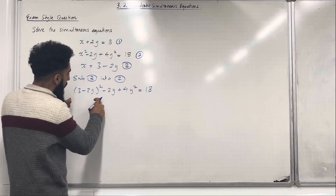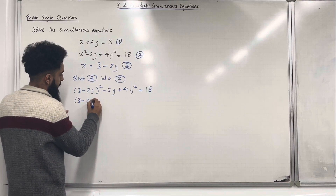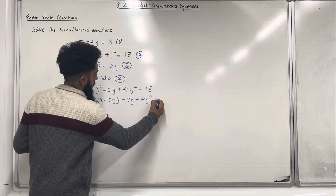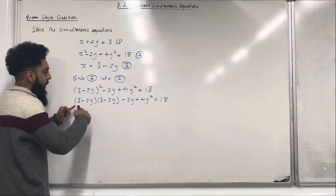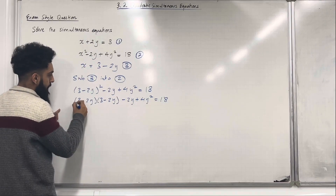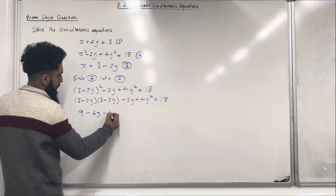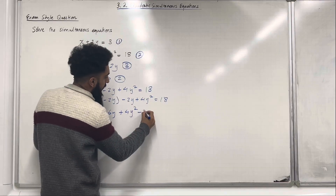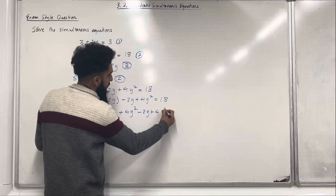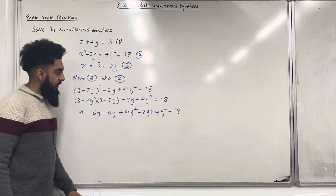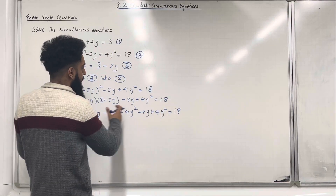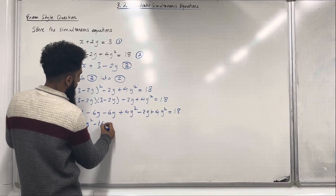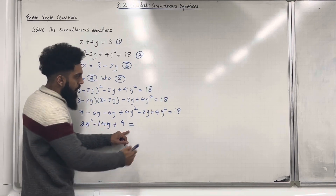We can open this up into double brackets and expand them — so 3 times 3 is 9, and so on. Then I've got minus 2y plus 4y squared equal to 18. Simplifying the left-hand side gives 8y squared minus 14y plus 9 equal to 18.